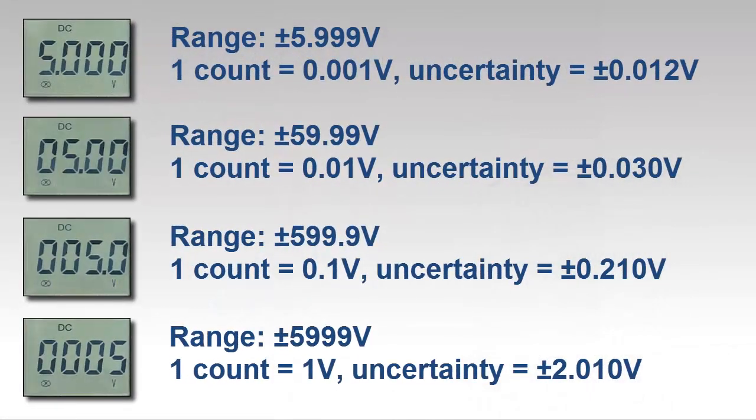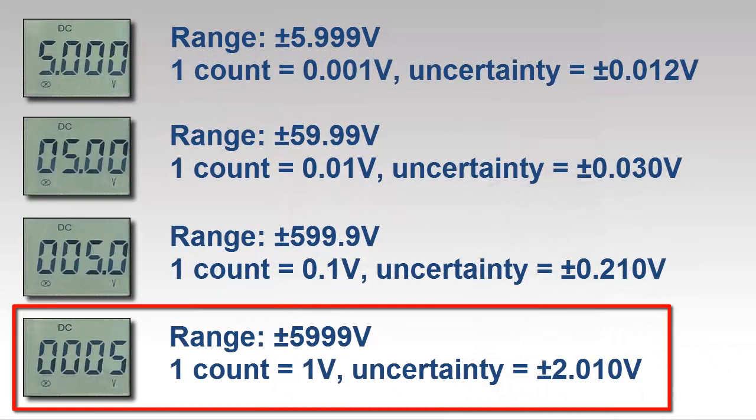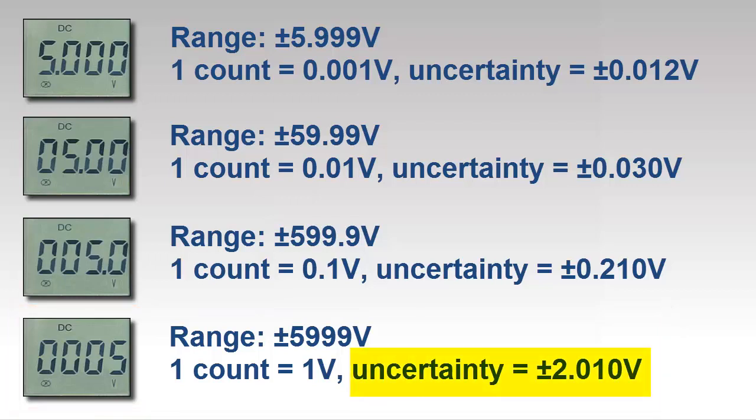At the highest range, the reading is 0.005, with one count equal to 1 volt. Applying the formula, the uncertainty in this case would be approximately plus or minus 2 volts, producing a measurement range of around 3 to 7 volts, orders of magnitude greater than our original uncertainty. Such a reading would, of course, have no practical value.